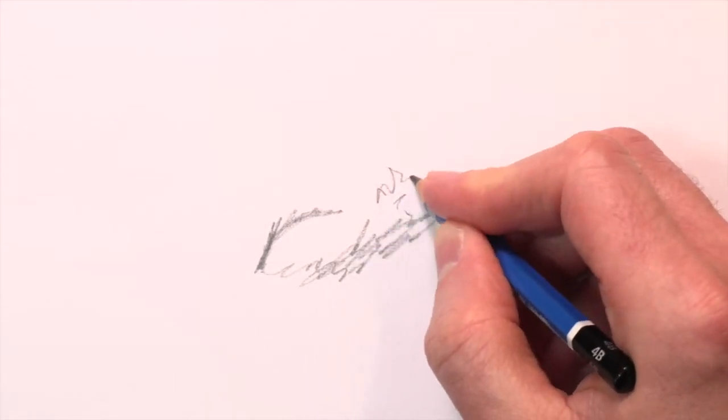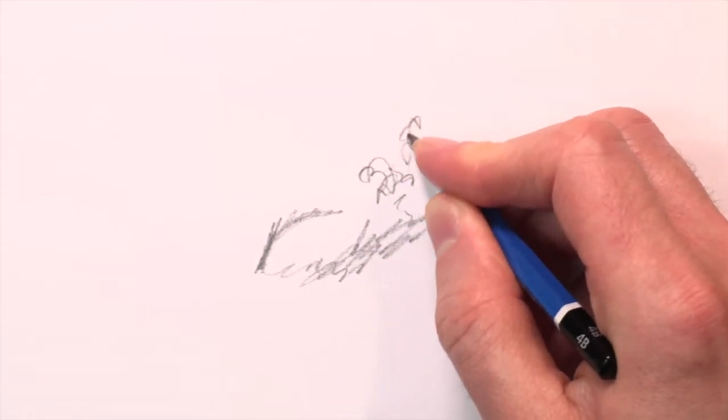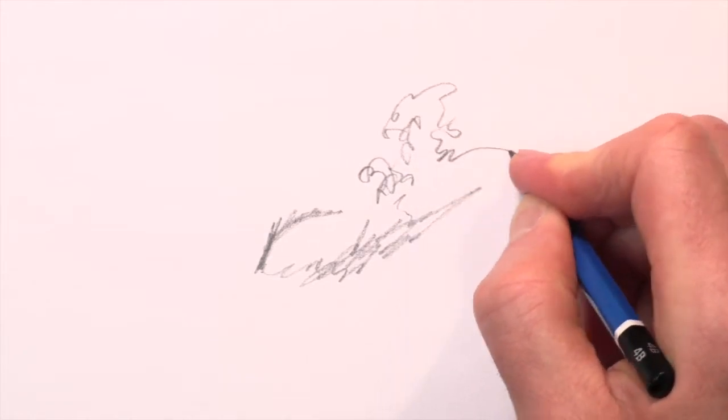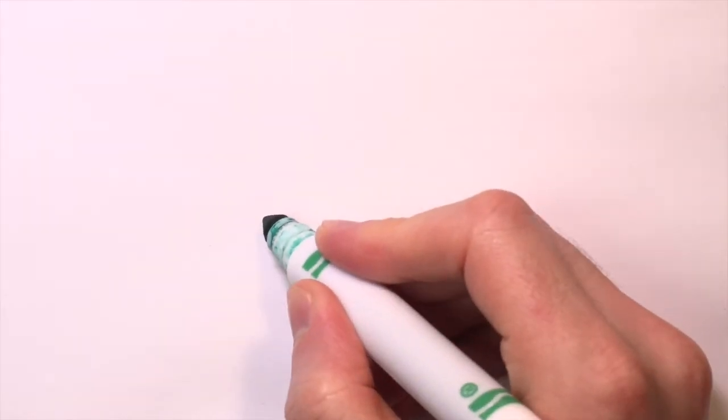And sometimes it ends up being a picture of something and sometimes it ends up being just marks on a page and that's okay too. Today I'm going to take a marker and make a dot and another dot. And now I'll draw a line to connect them.